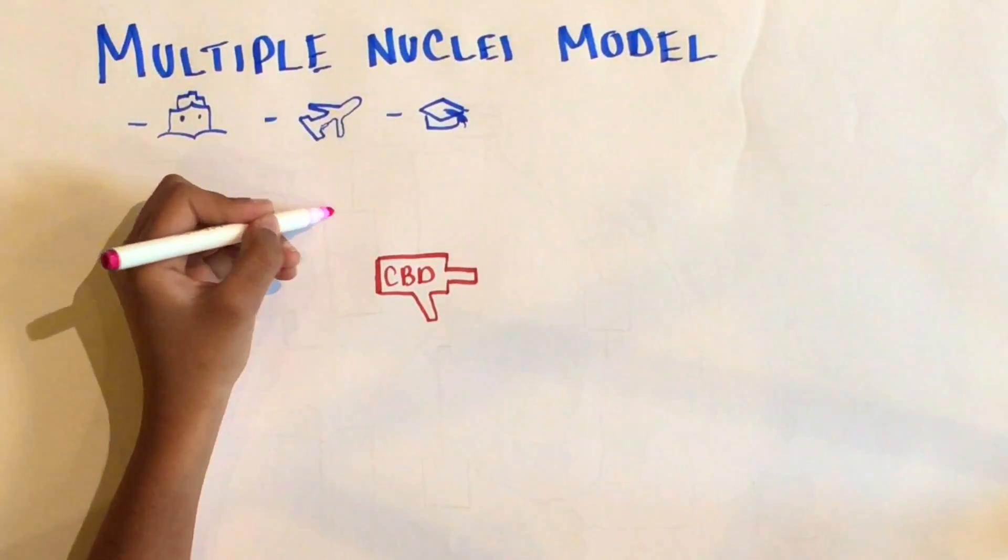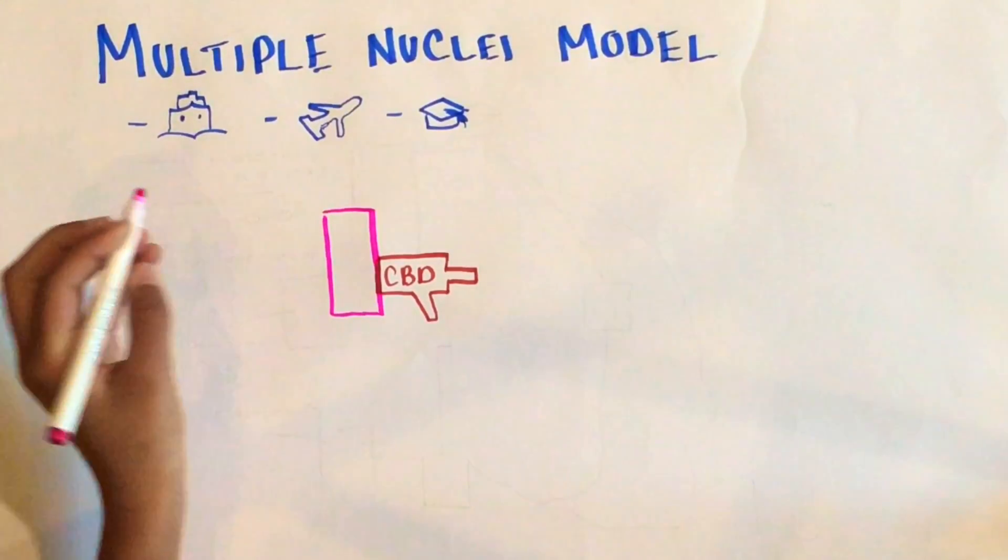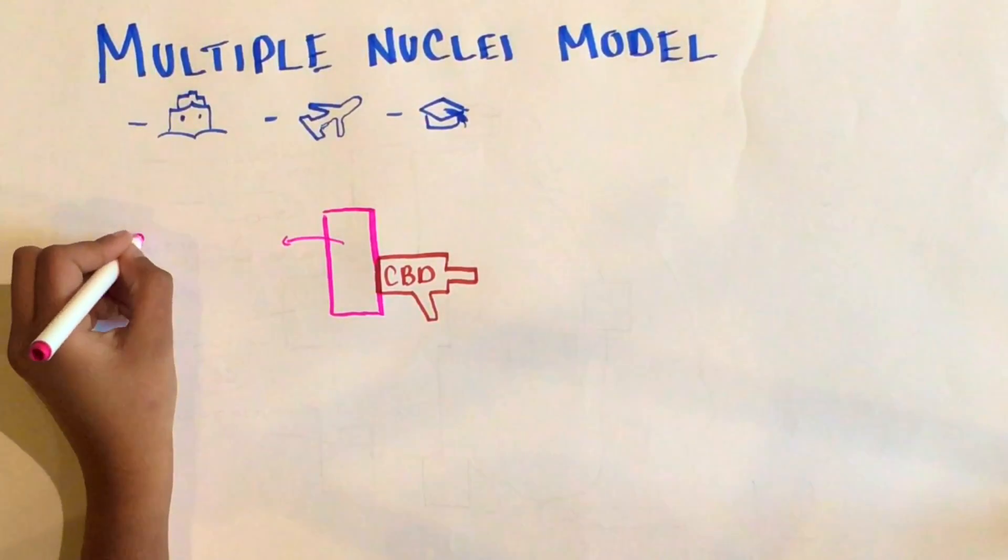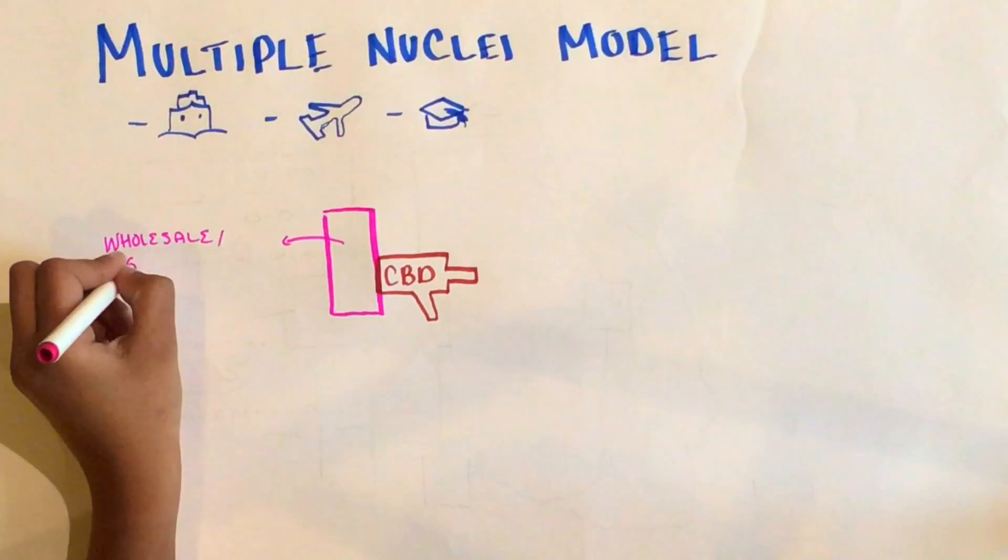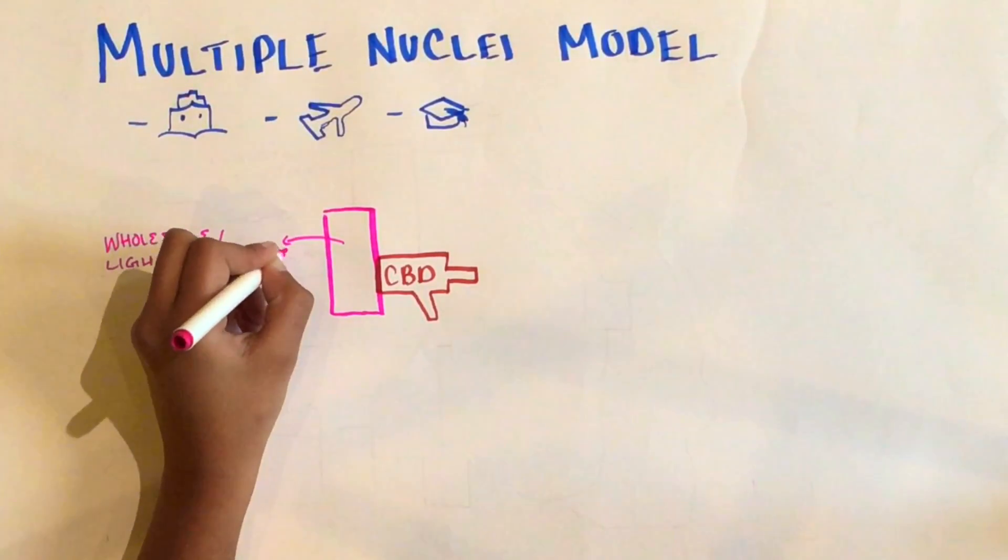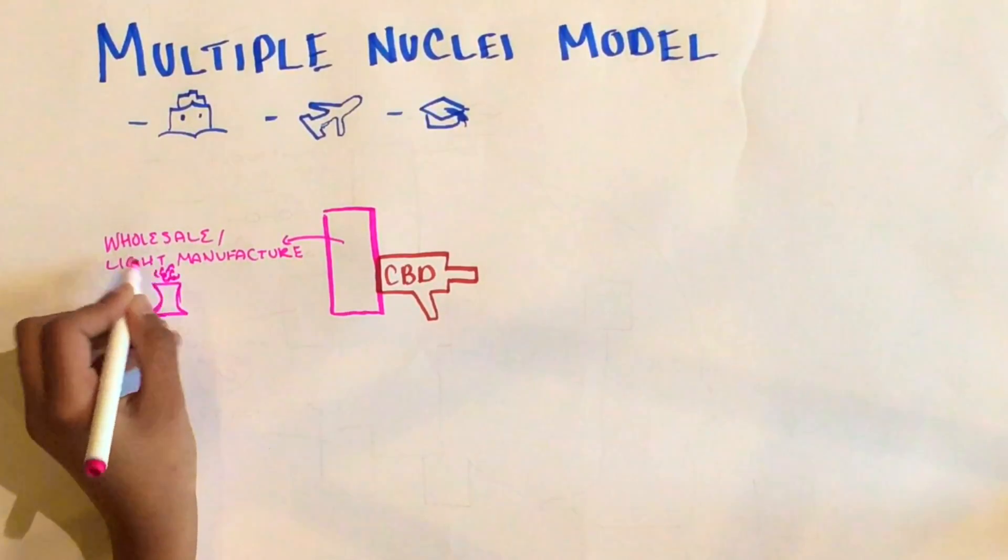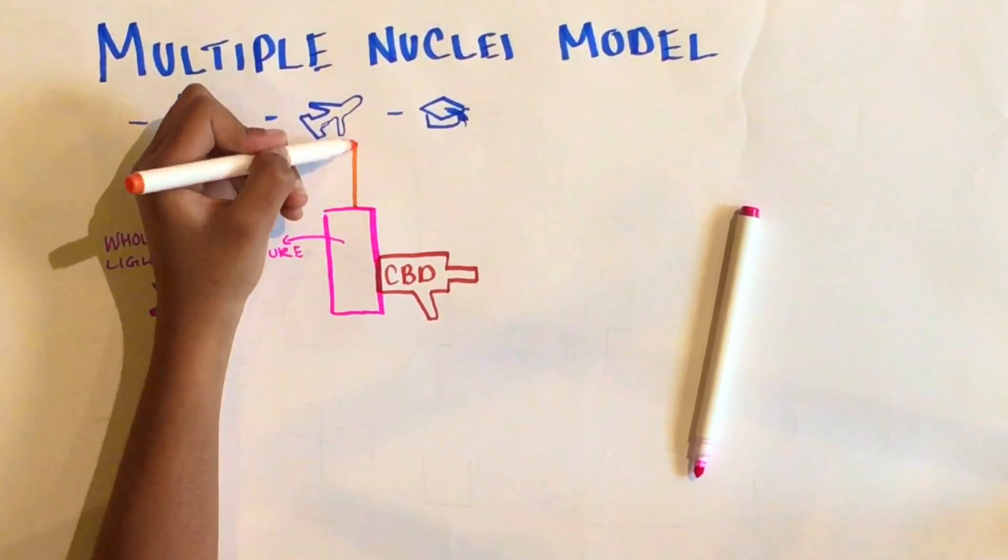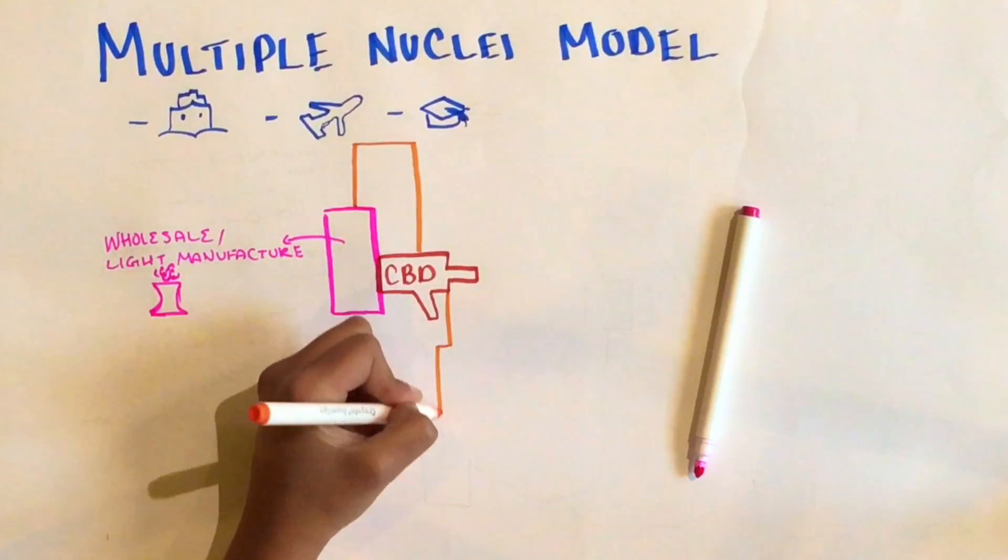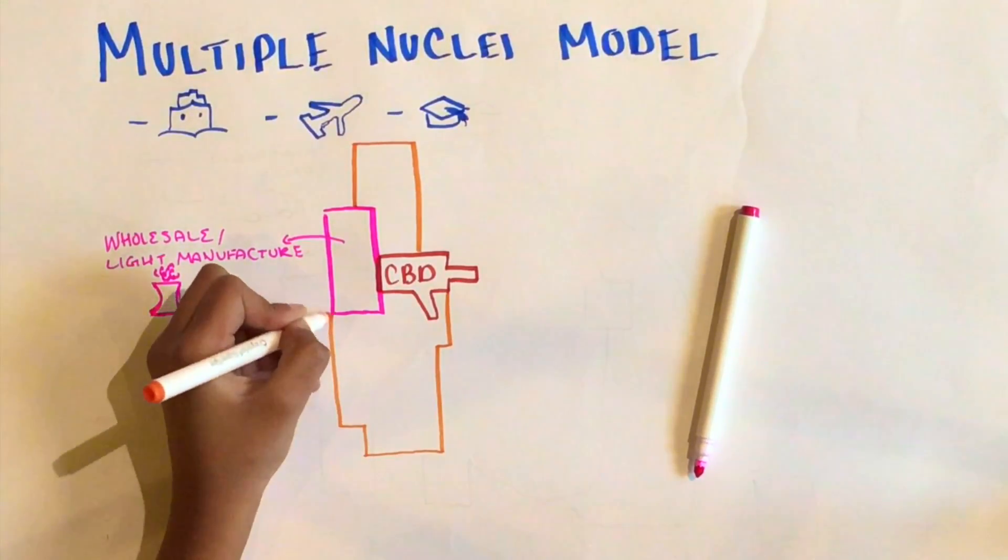The specific districts in this model would be comprised of the CBD, which is still the major district in this model. This would also have many smaller districts around it. The next would be the wholesale slash light industrial district, which is more customer-oriented. It is also nearest to the residential areas, and goods that are manufactured there use little to no raw materials.